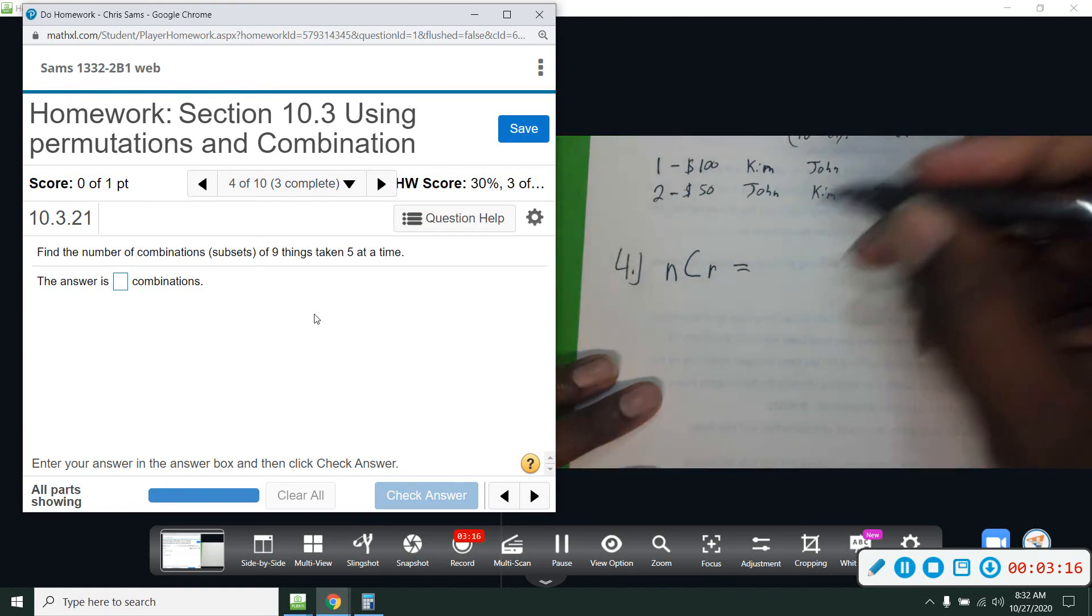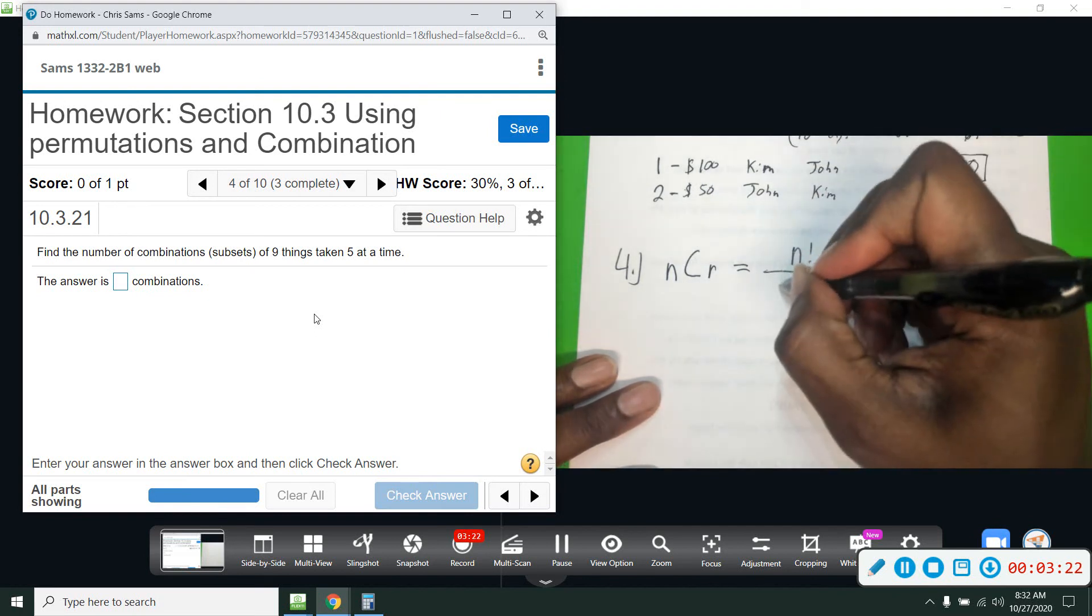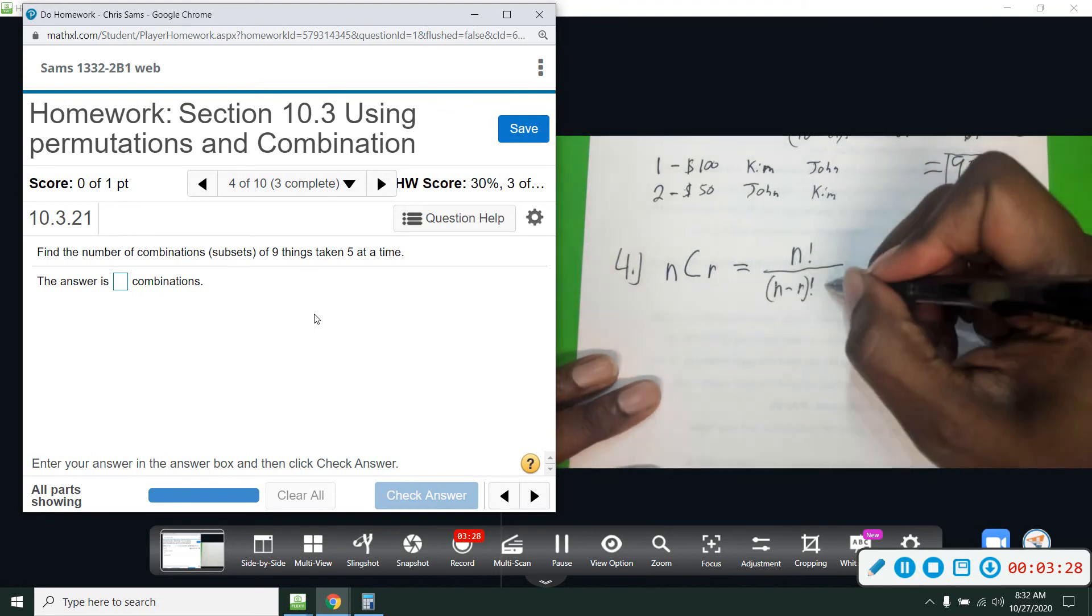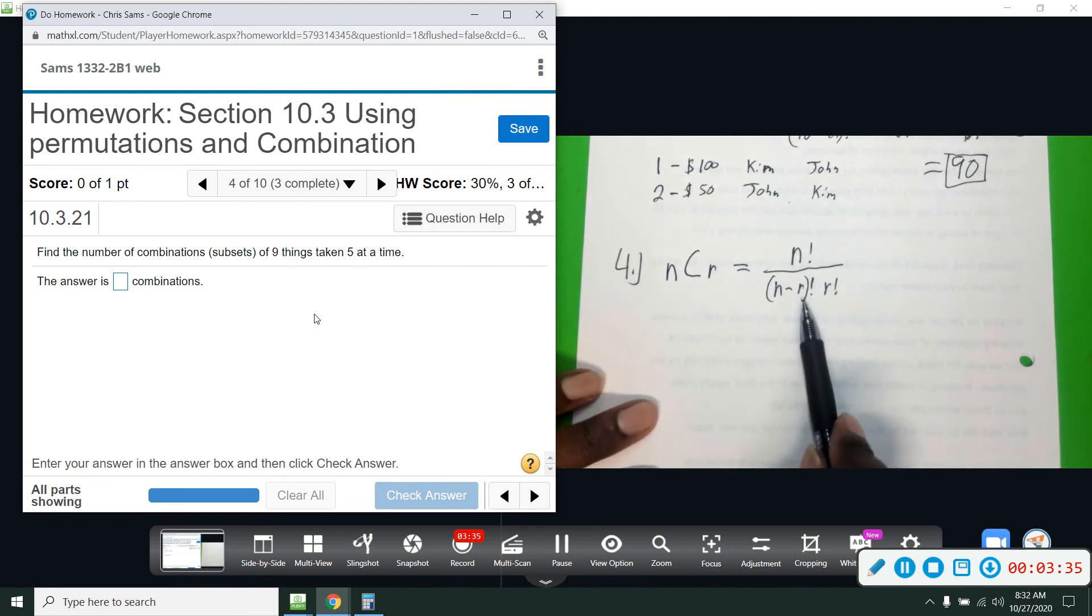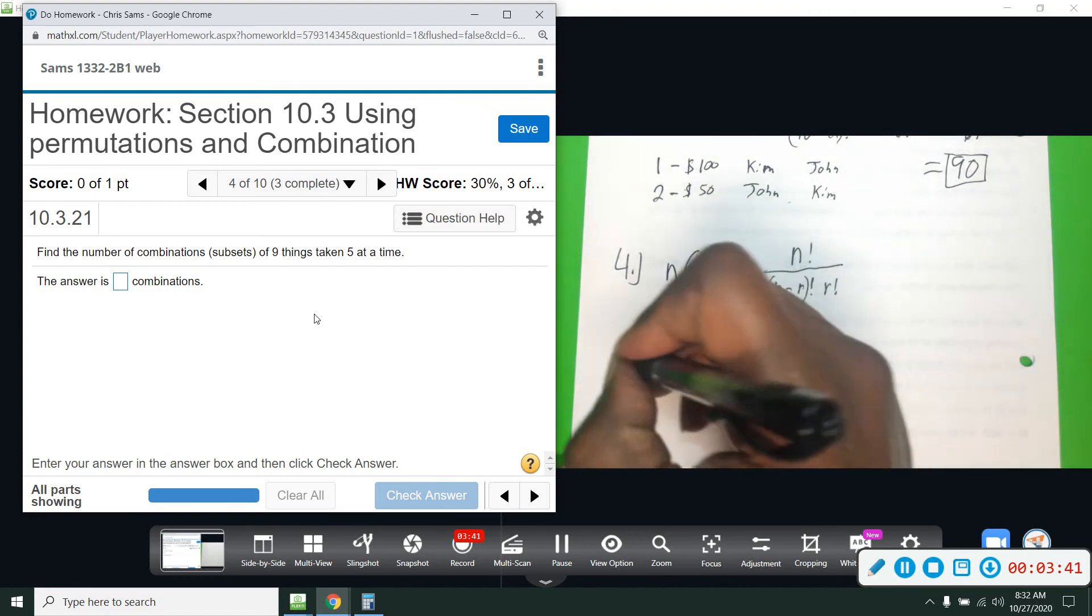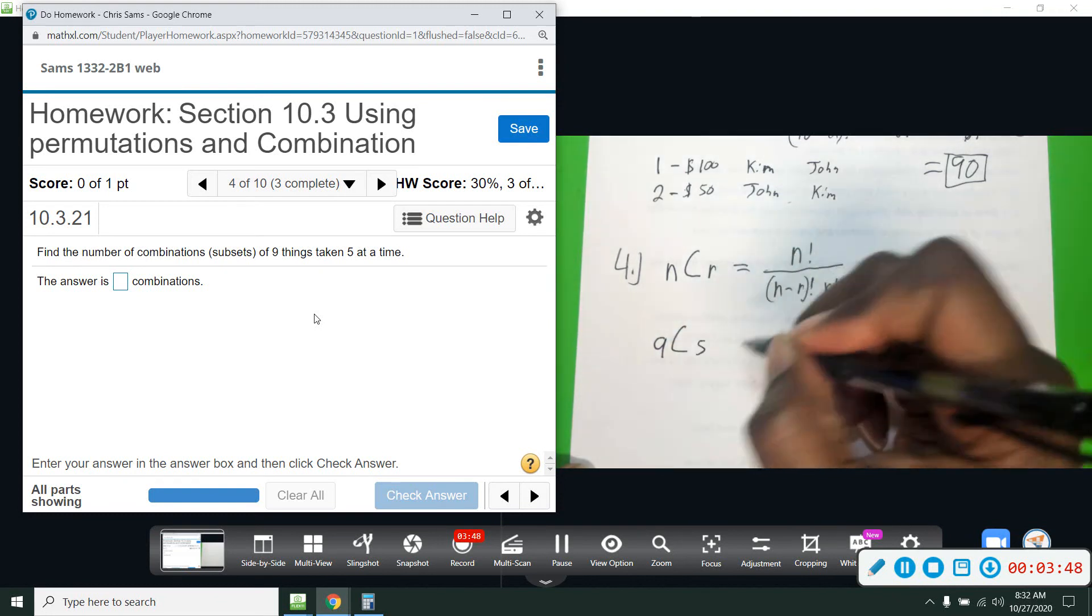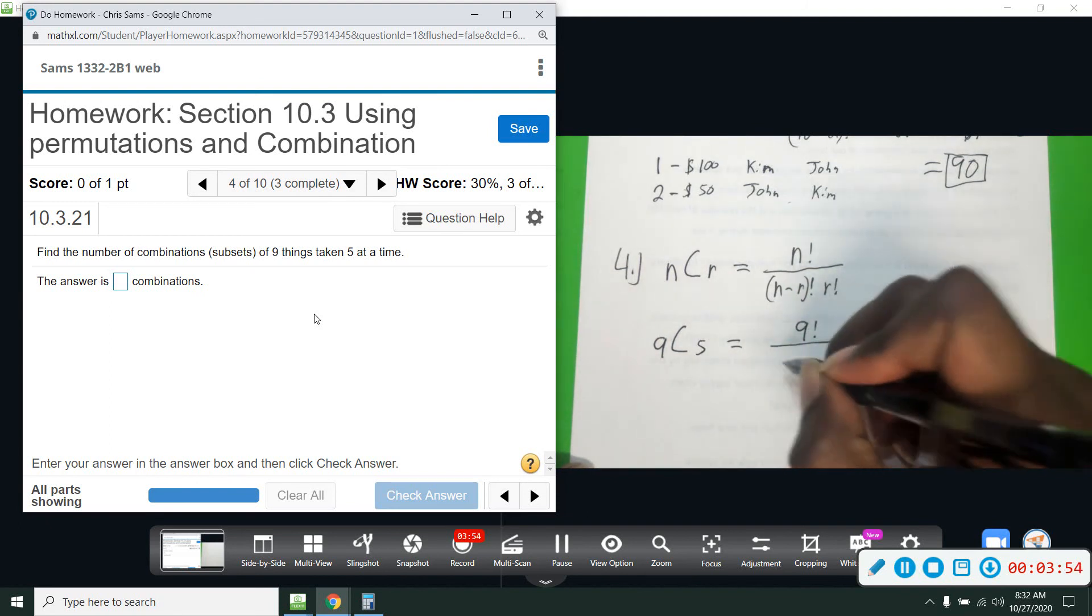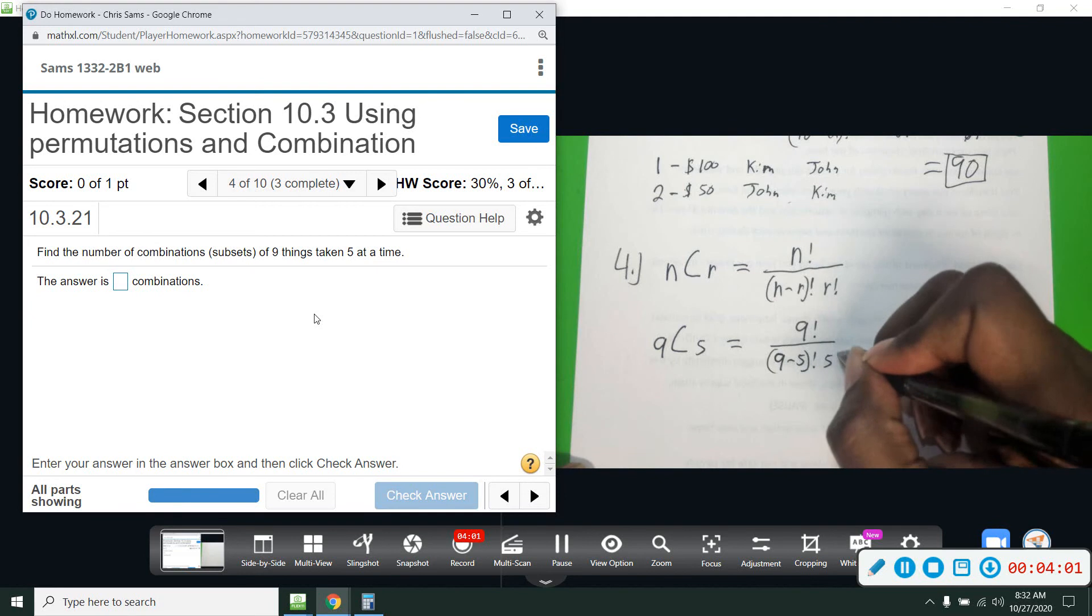So the formula here is just slightly different. It is N factorial over N minus R factorial. So it starts out the same and then it adds an additional R factorial. So that R factorial is going to get rid of the repeat. So this is the way of combinations. The only difference is you add another R factorial here. So how we solve that, nine combinations of five, or we just say nine choose five, is going to be nine factorial over nine minus five factorial and then five factorial.